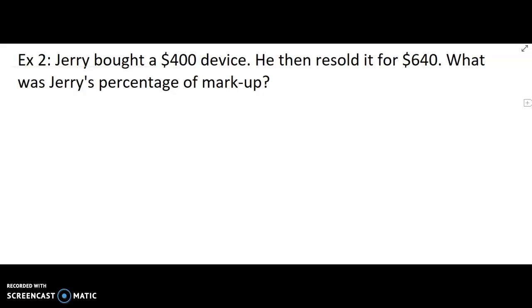So think about the two equations or formulas that we used earlier. Both of them had the amount of markup in the equation. And if we remember, the amount of markup is the difference between the purchase price of an item and the selling price of an item. The markup is the difference between. So the amount of markup would be the selling price minus the purchase price. So Jerry marked this thing up $240.